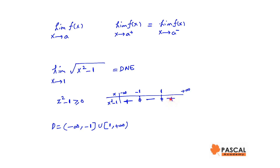This means the domain of f of x equals square root of x squared minus 1 is from negative infinity to negative 1, where negative 1 is included, and from 1 to positive infinity, where 1 is included.